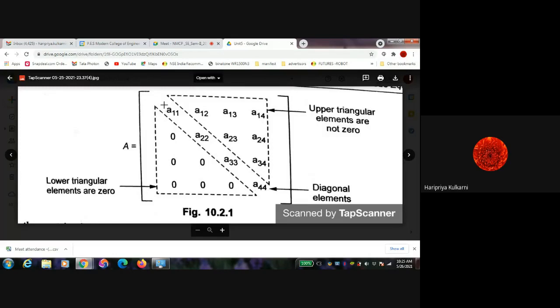And this is the diagonal elements. Let us say diagonal elements are a11, a22, a33, a44. So I can make either lower triangular elements as zero or I can make upper triangular elements as zero.